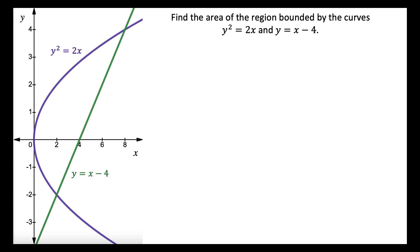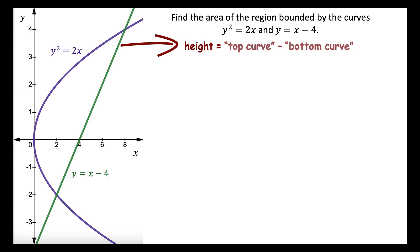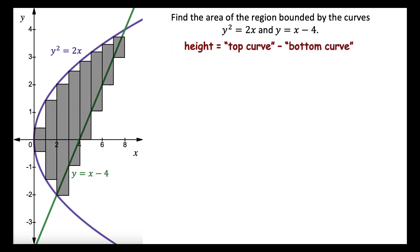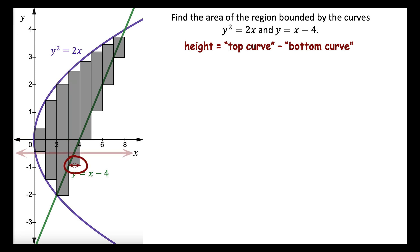Before we find the points of intersection, we should decide how to orient the typical approximating rectangle. Recall that the height of each approximating rectangle is the difference between two different curves — the top curve minus the bottom curve. Let's use left endpoints and assume that we should orient the approximating rectangles vertically, so that the height is parallel to the y-axis and the width is parallel to the x-axis.